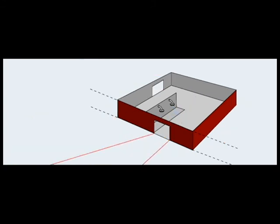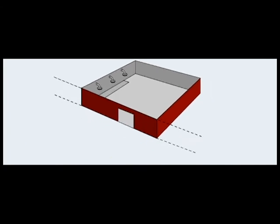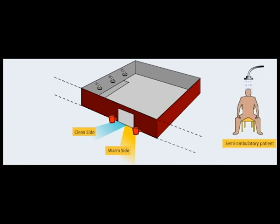The decon corridor principle of demarcating a warm and cold end still applies to fixed facilities with one exception. In a facility with a single door, patients and the operations team should enter along one side of the door, the warm side, and exit along the other, the clean side.